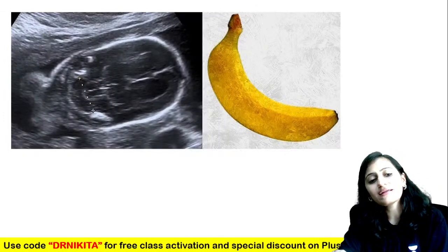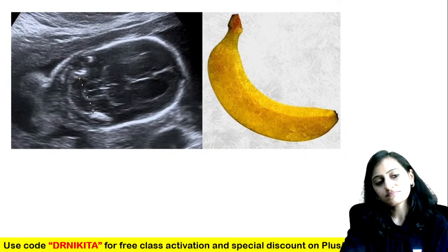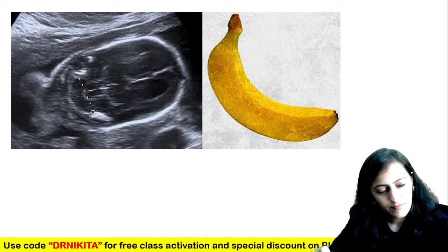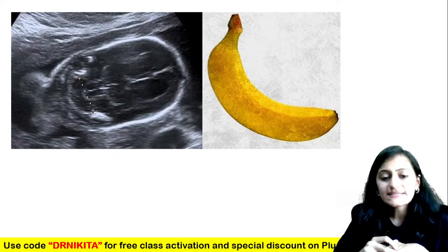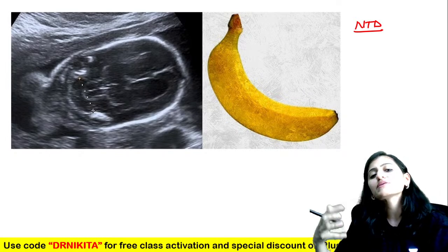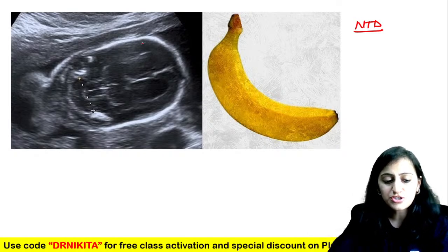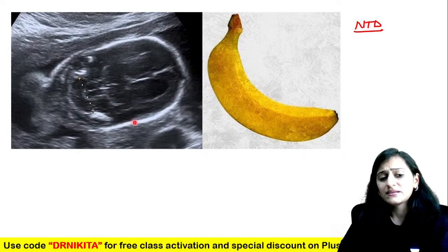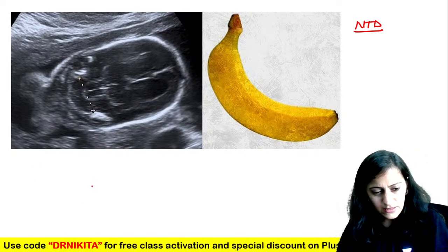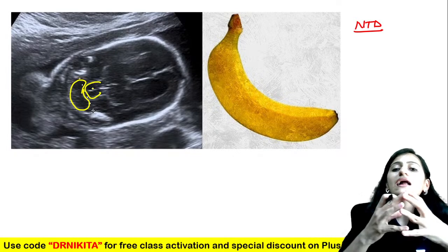The banana sign is seen with neural tube defects. This image shows the fetal skull — the white bones — and the cerebellum. The cerebellum is shaped like a banana, wrapping around the brain stem. This is the banana sign.